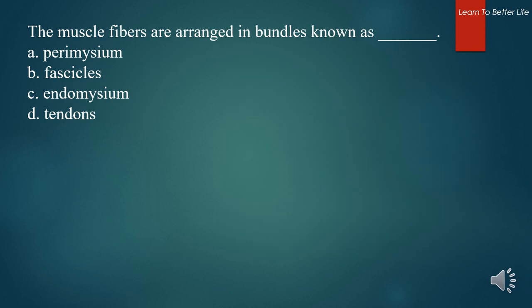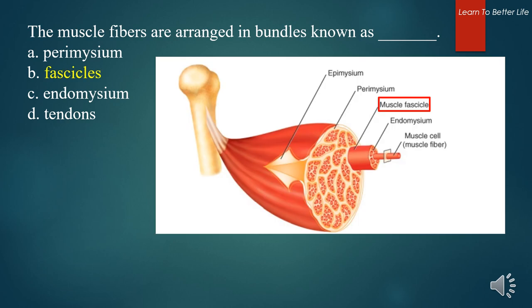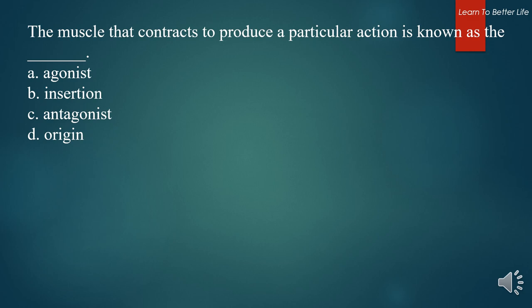The muscle fibers are arranged in bundles known as. A. Perimysium. B. Fascicles. C. Endomysium. D. Tendons. The answer is B. Fascicles. The muscle that contracts to produce a particular action is known as the what? A. Agonist. B. Insertion. C. Antagonist. D. Origin. It's known as A. Agonist.